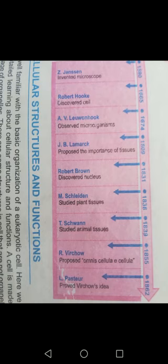In brief: Janssen invented the microscope. Robert Hooke in 1665 discovered the cell. Leeuwenhoek in 1674 observed microorganisms. Lamarck in 1809 proposed the importance of tissue. Robert Brown discovered the nucleus. Matthias Schleiden studied plant tissues. Schwann studied animal tissues. Rudolf Virchow proposed that new cells come from pre-existing cells. And Louis Pasteur provided experimental proof for Virchow's idea. This is the brief history of cell theory.